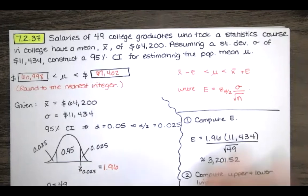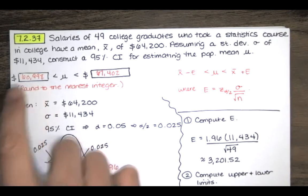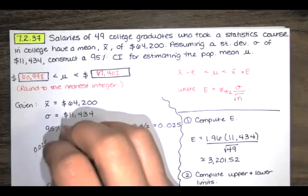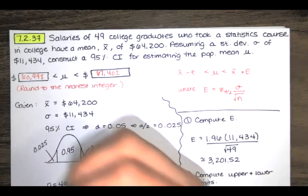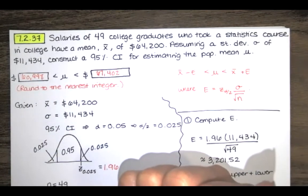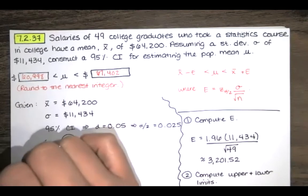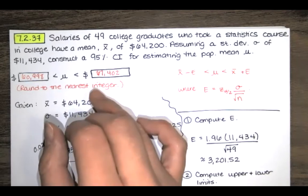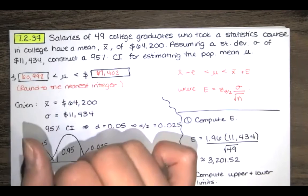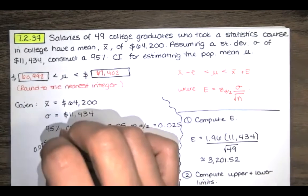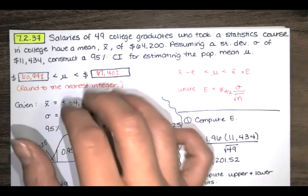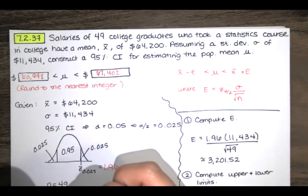So let's read the problem statement. It says, assuming a standard deviation of $11,434, construct a 95% confidence interval for estimating the population mean mu. And this is the mean salary of college graduates who've taken a statistics class. So the mean salary, or we are 95% confident that the true mean salary of college graduates that have taken a statistics class is between $60,998 and $67,402. So the true mean is in there somewhere, 95% of the time, if we do this over and over again.